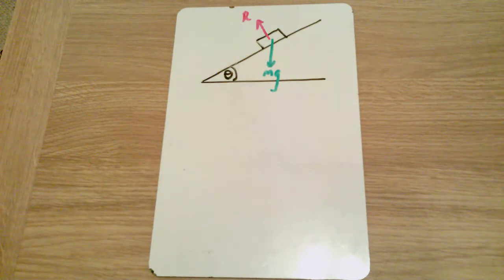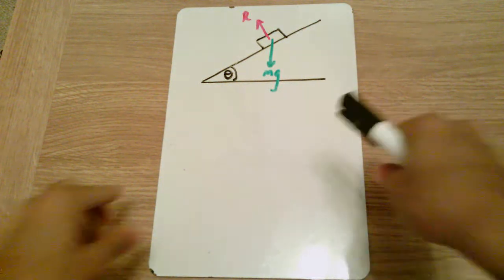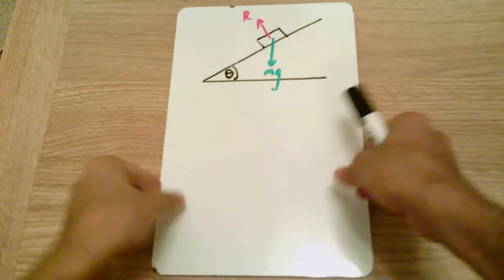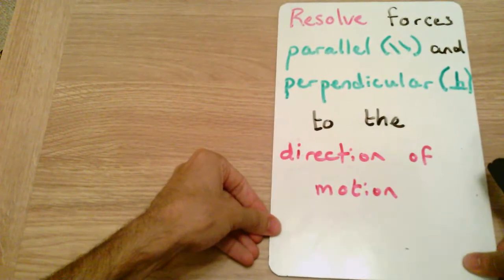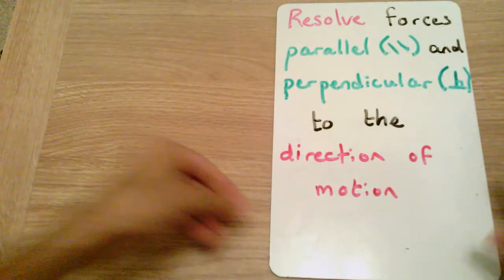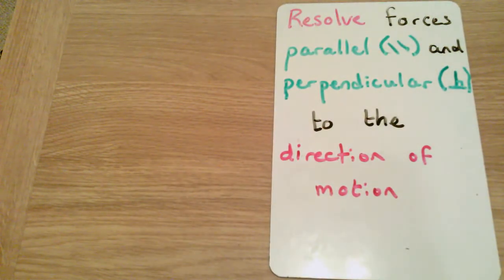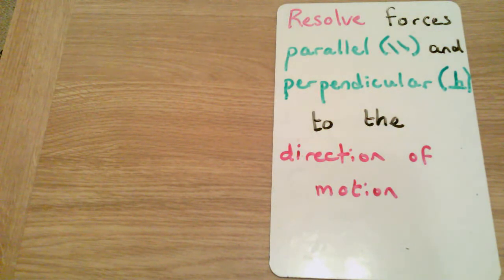The mg weight force is not perpendicular to the surface, so we actually need to split it and resolve it into its parallel and perpendicular components. We need to resolve our forces into parallel and perpendicular directions to the direction of motion.